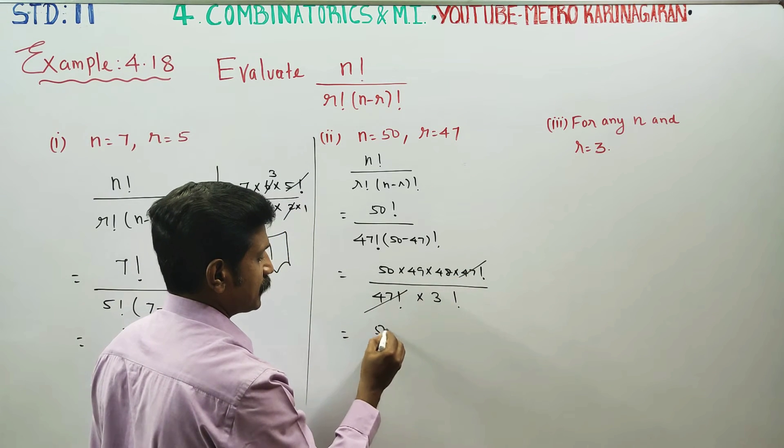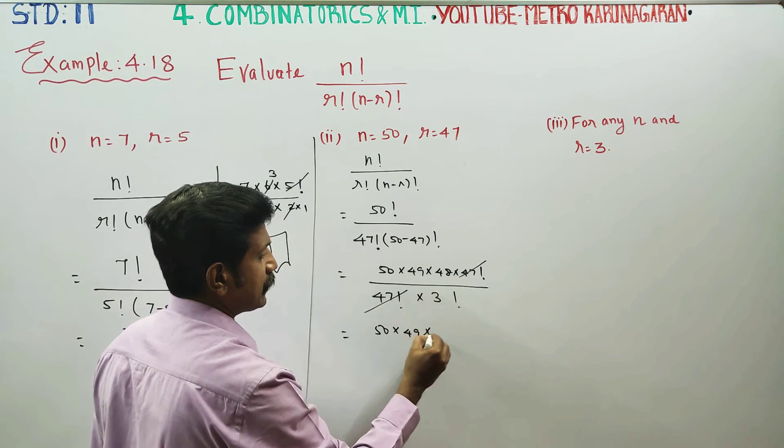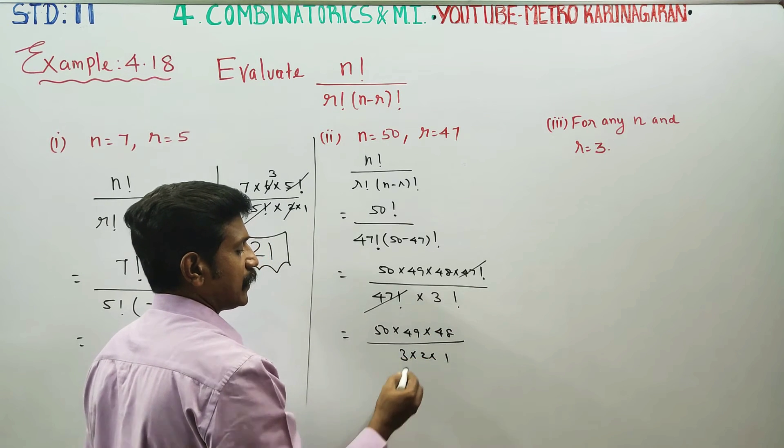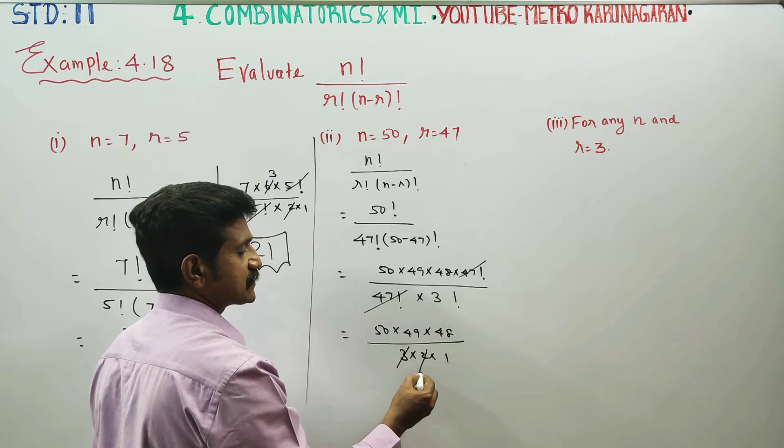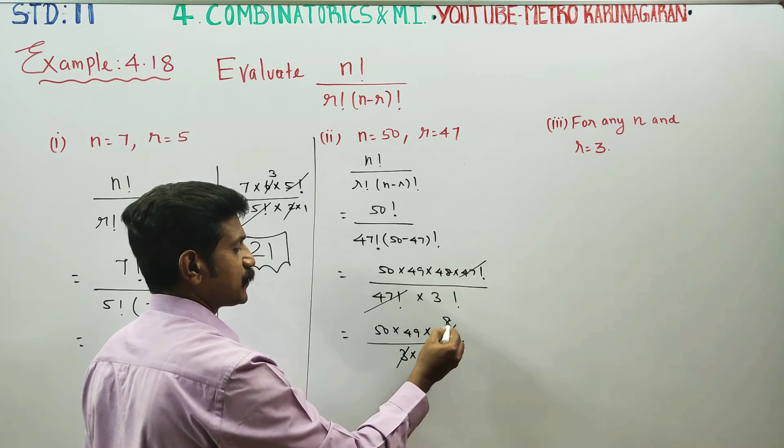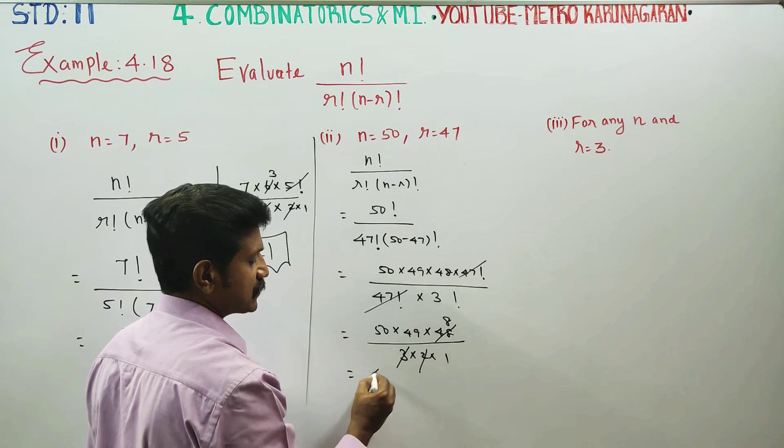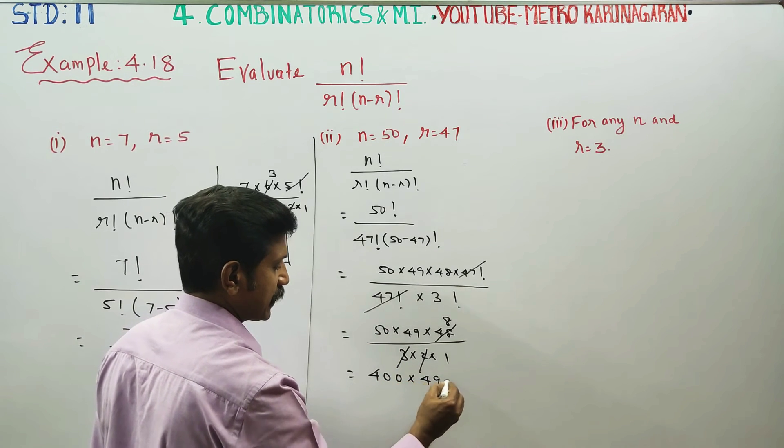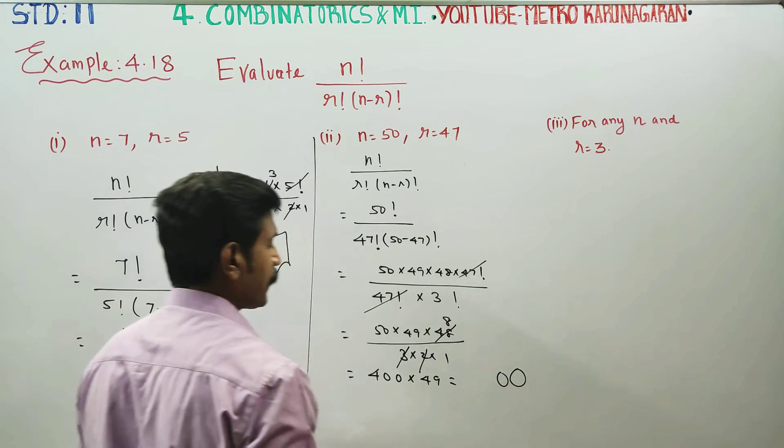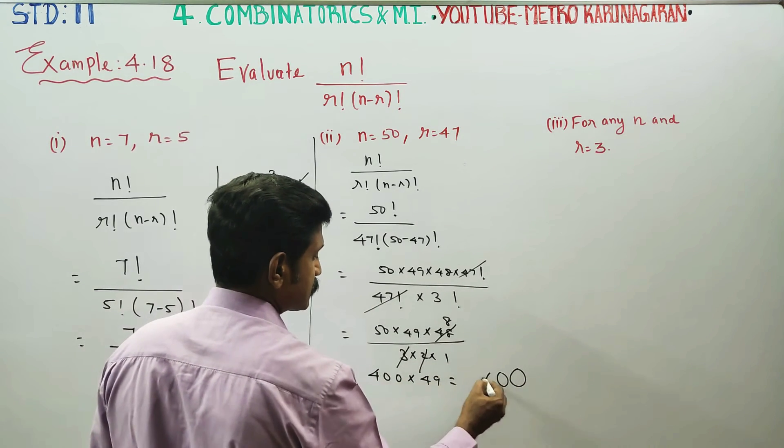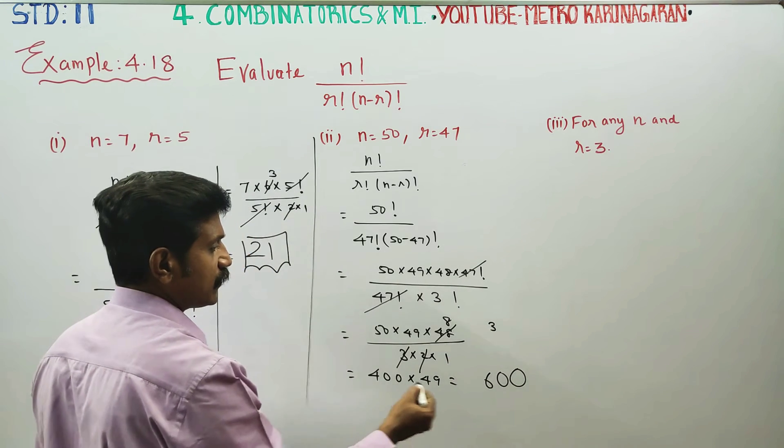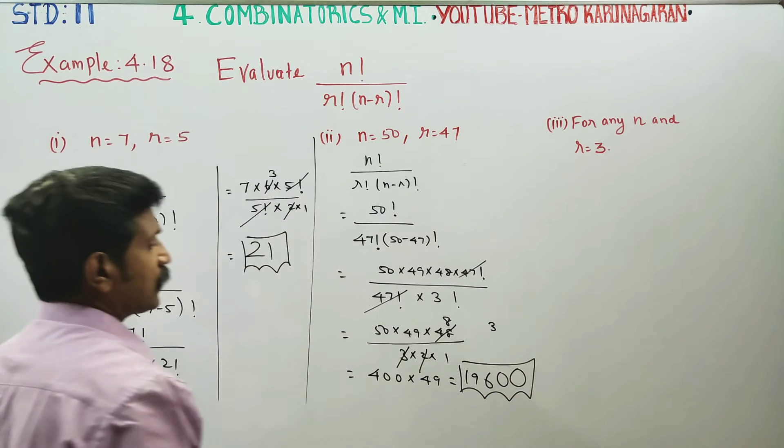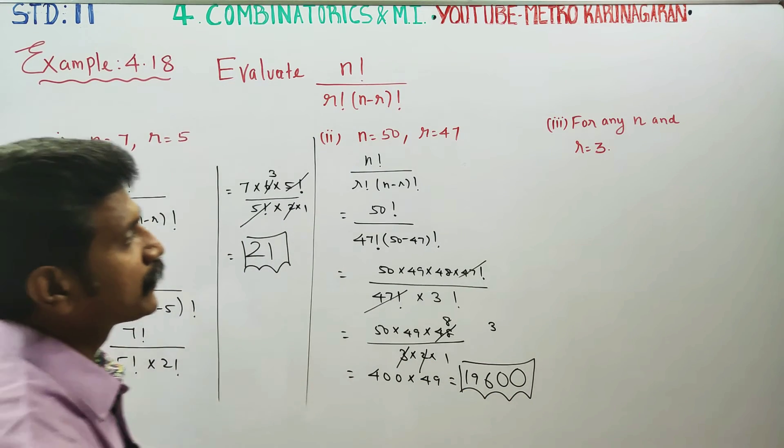Next stage, 50 into 49 into 48. 3 factorial, 3 into 2 into 1. 3 times 2 is 6, 8 times cancel, 8 into 5, 8 fives are 40. 4 nines are 36, 3 carry, 4 fours are 16 plus 3 is 19. Therefore your answer will be 19600.